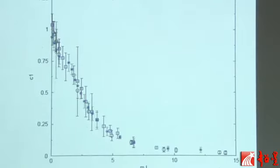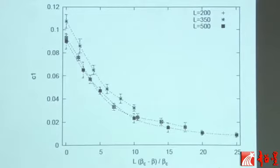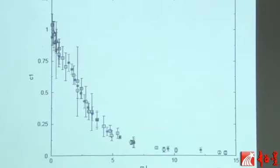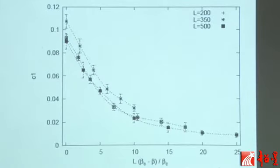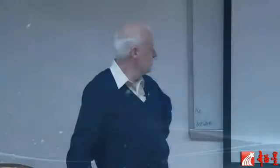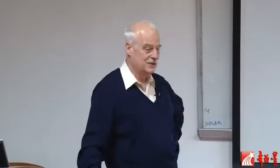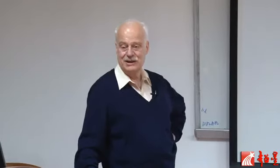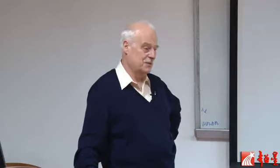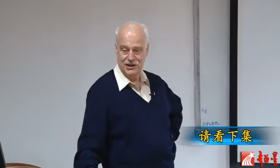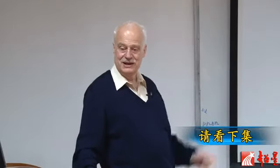Those are analogous results for the random ferromagnetic Potts model. The violation is smaller here. For the random Potts model, the exact critical temperature is known because the model is self-dual.